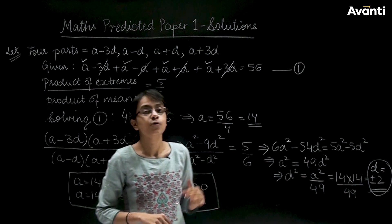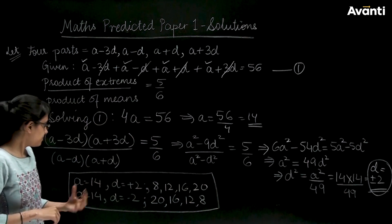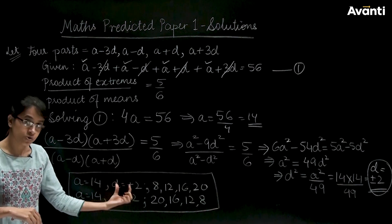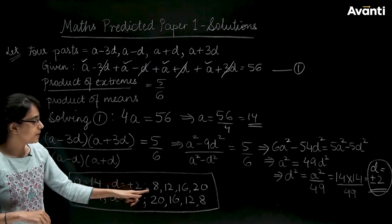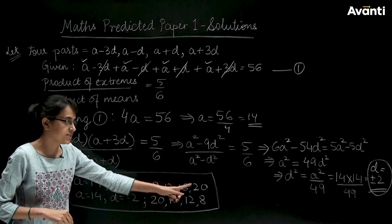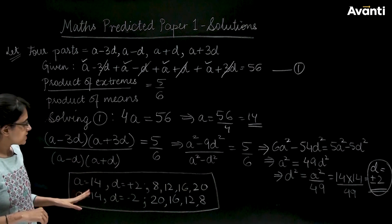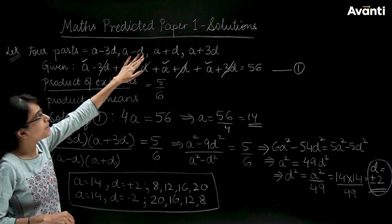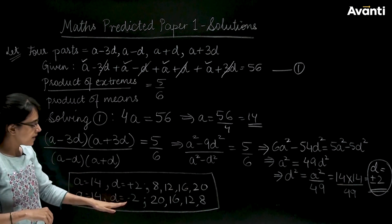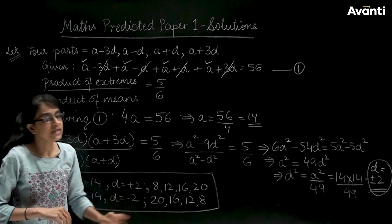Now we will find the 4 parts. If we take A as 14 and D as plus 2, we get the 4 parts as 8, 12, 16, and 20. We have simply substituted the values of A and D. However, if D is minus 2, you will get the 4 parts in reverse order: 20, 16, 12, 8.